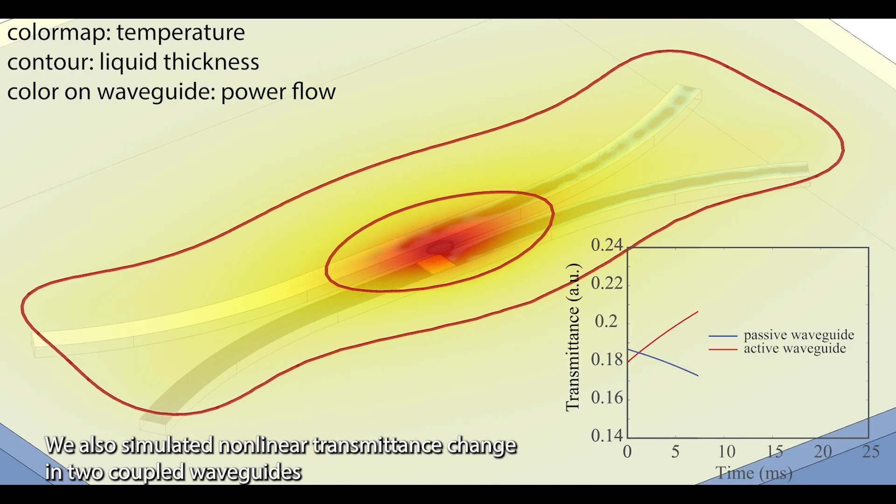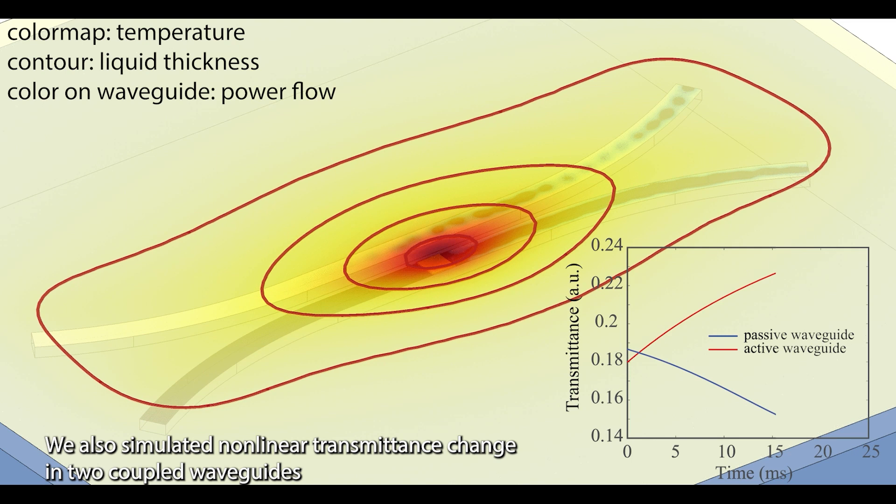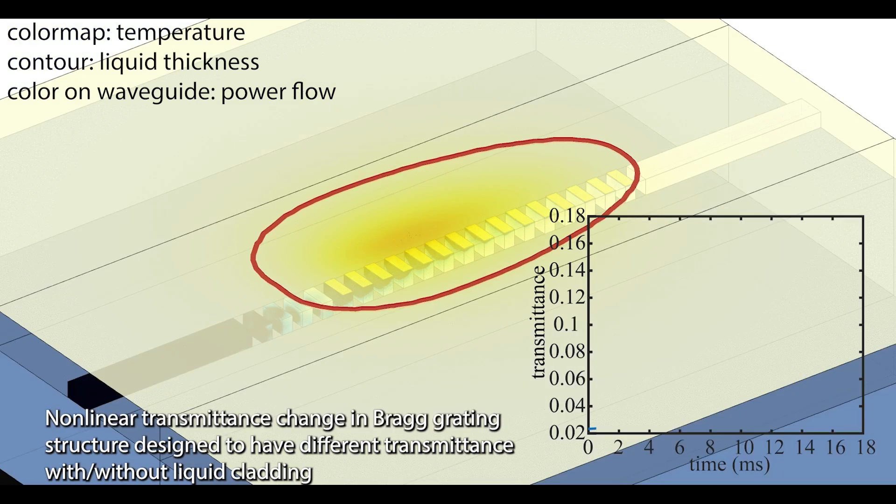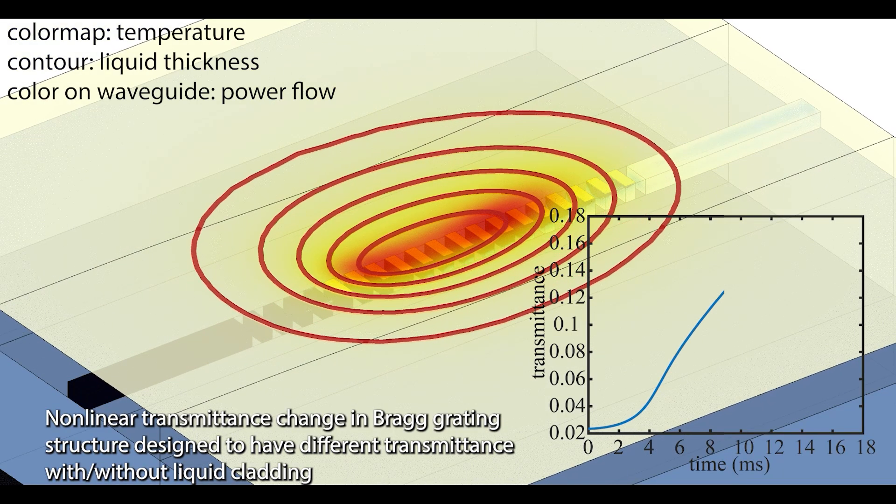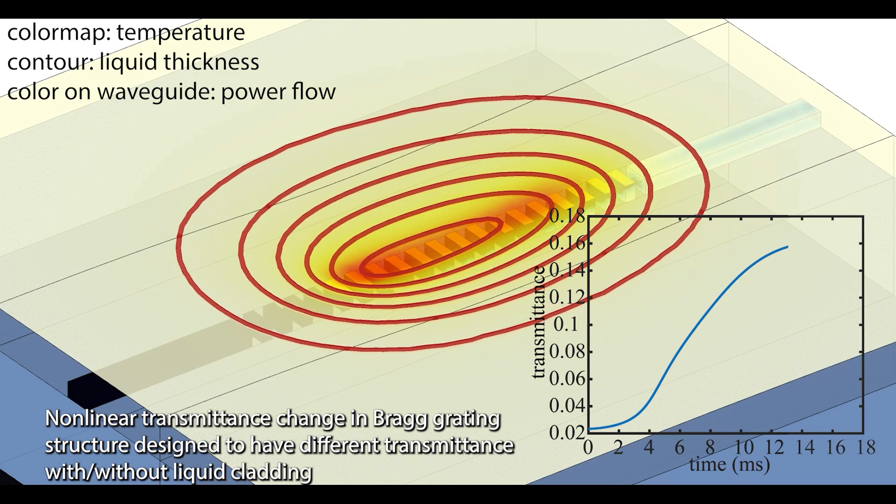We also simulated non-linear transmittance change in two coupled waveguides, and non-linear transmittance change in Bragg grating structures designed to have different transmittance with or without liquid cladding.